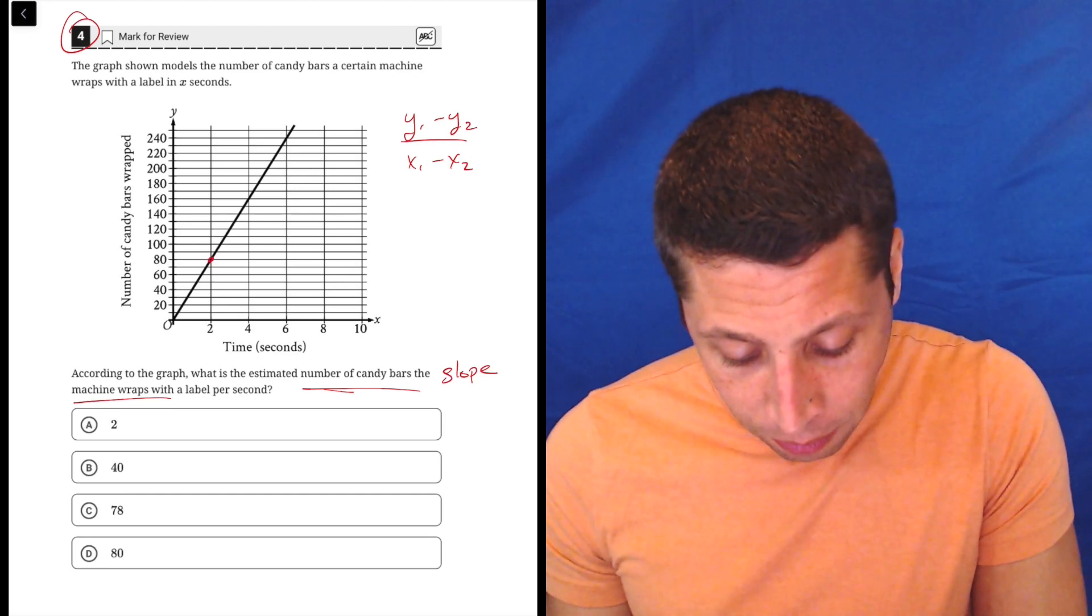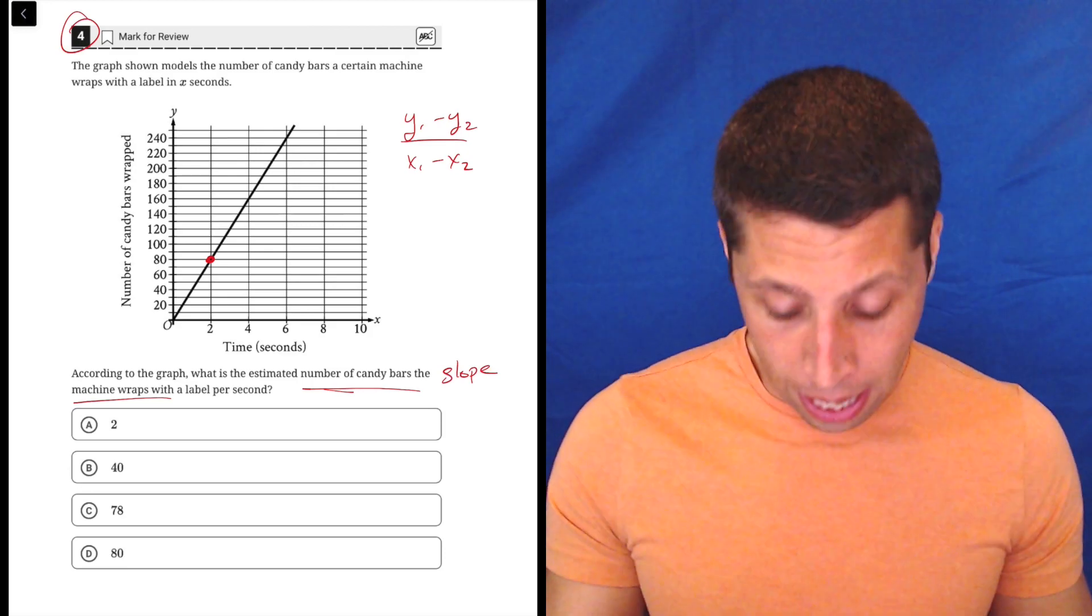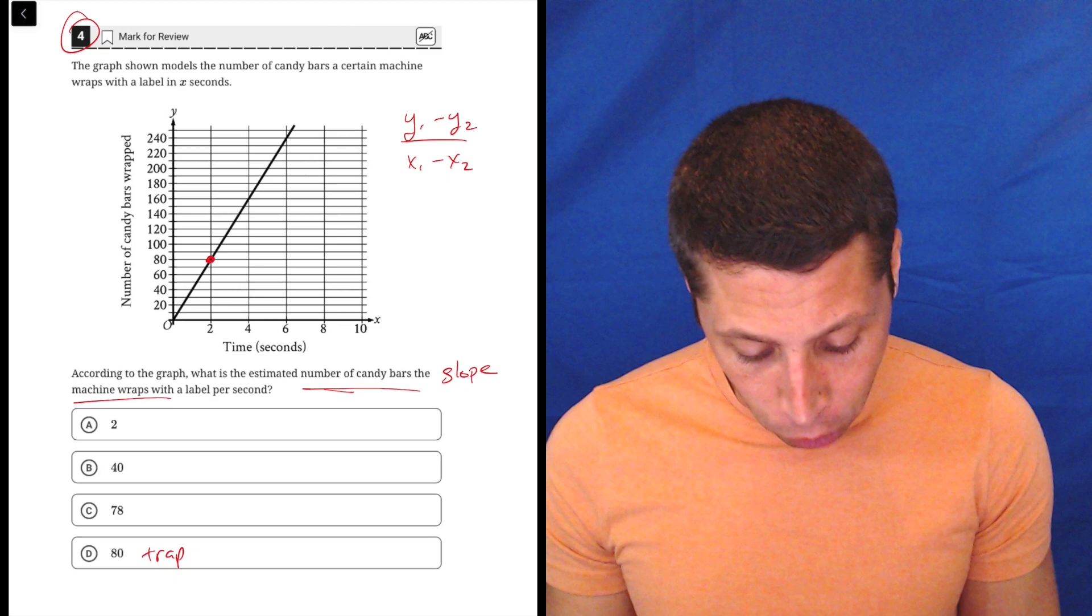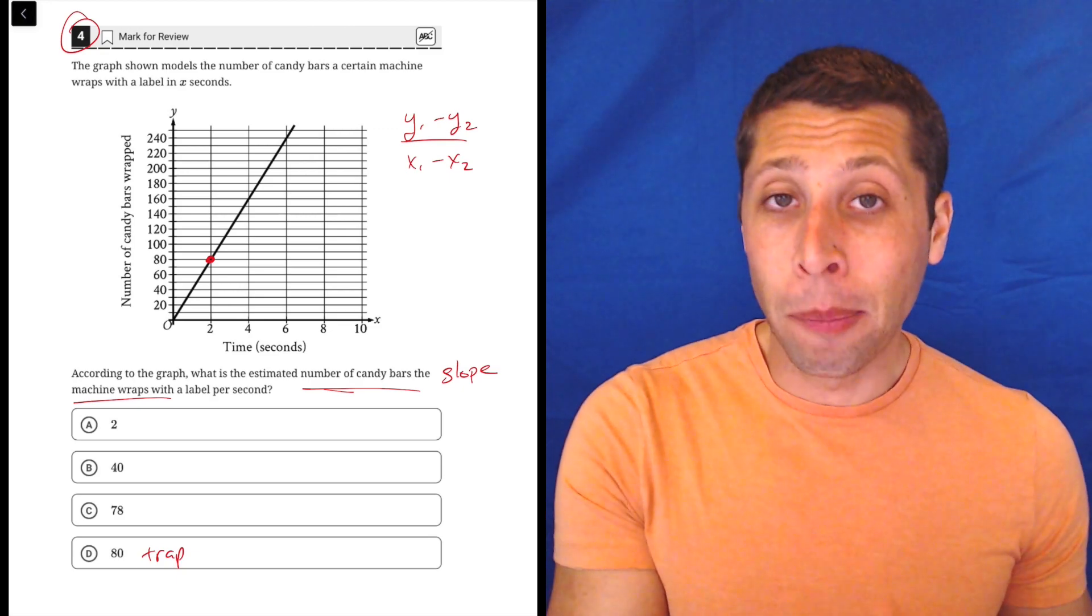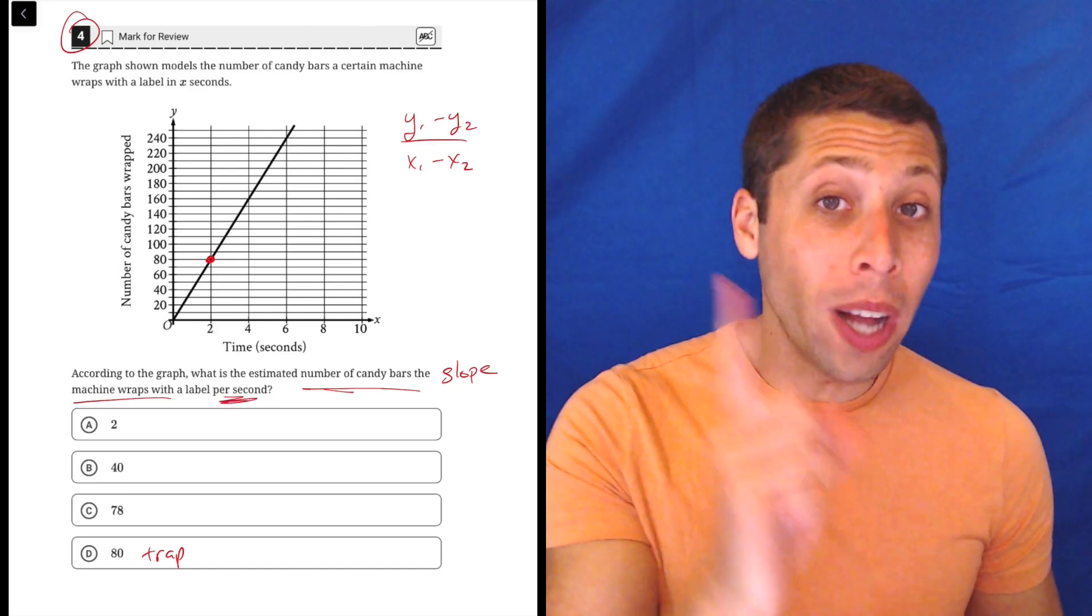What I see right away is I have a very easy point right here. Two—in two seconds, it makes, what is this, 80 candy bars, right? Now you can see that's a little bit of a trap answer because it's the first point that we would notice, but it's not the actual answer because they want to know per second, per one second.